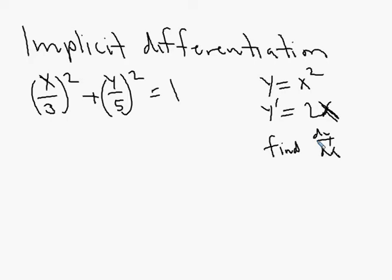When we do that with our implicit relation over here — we shouldn't call it a function, it's an implicit relation — we do the same thing: we take the derivative of both sides.